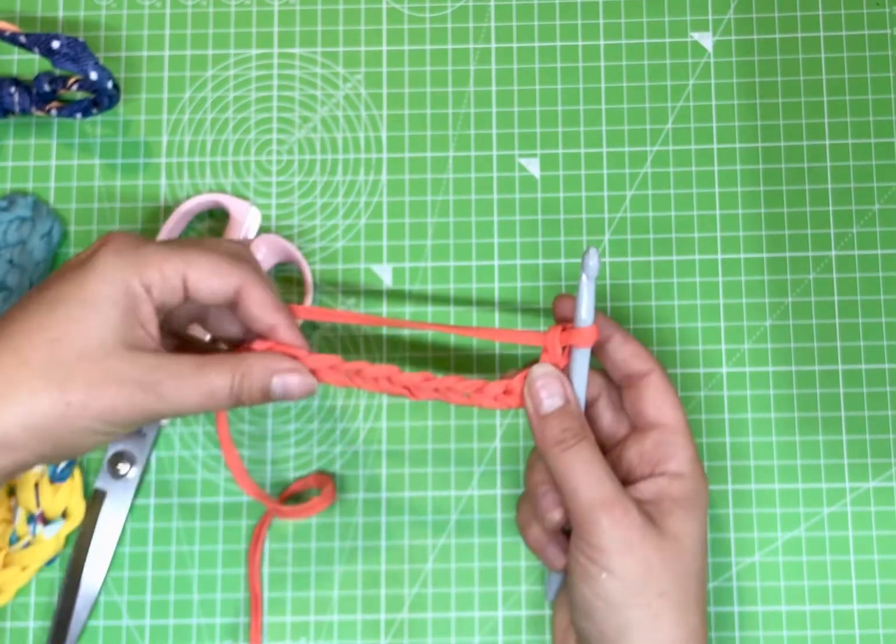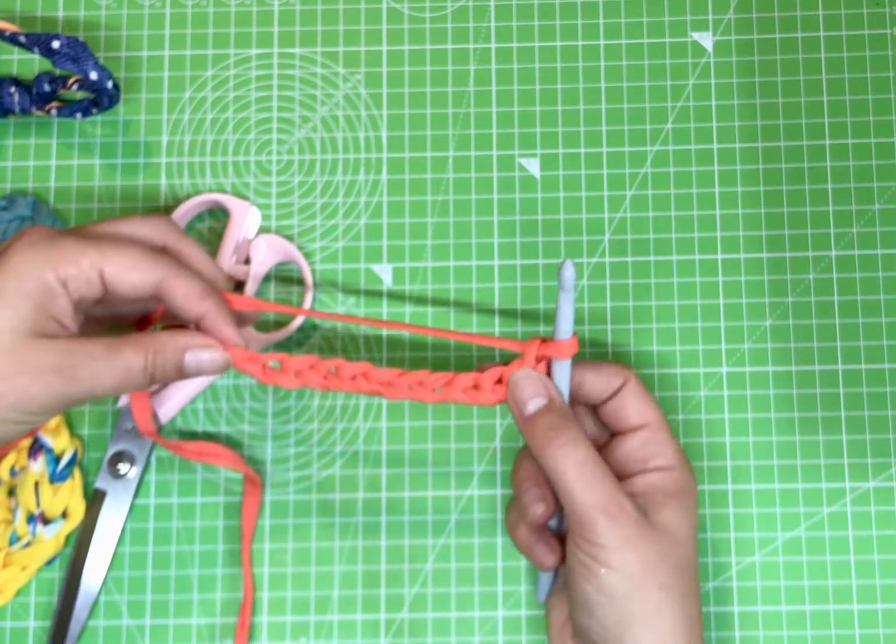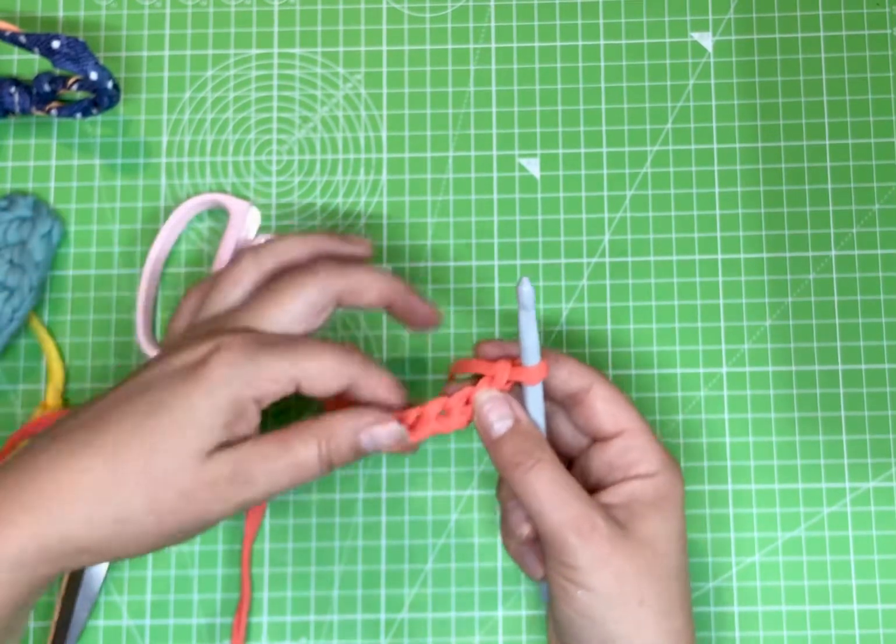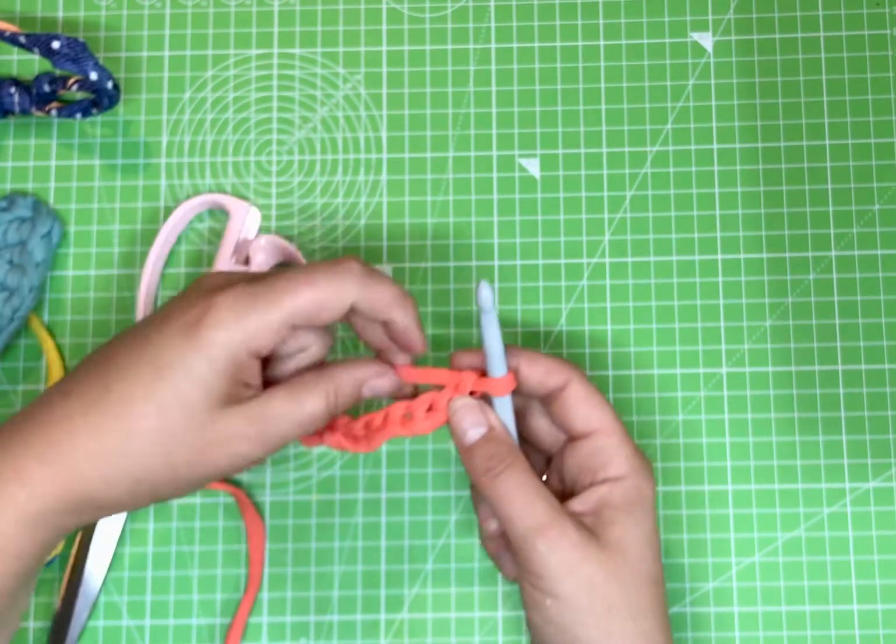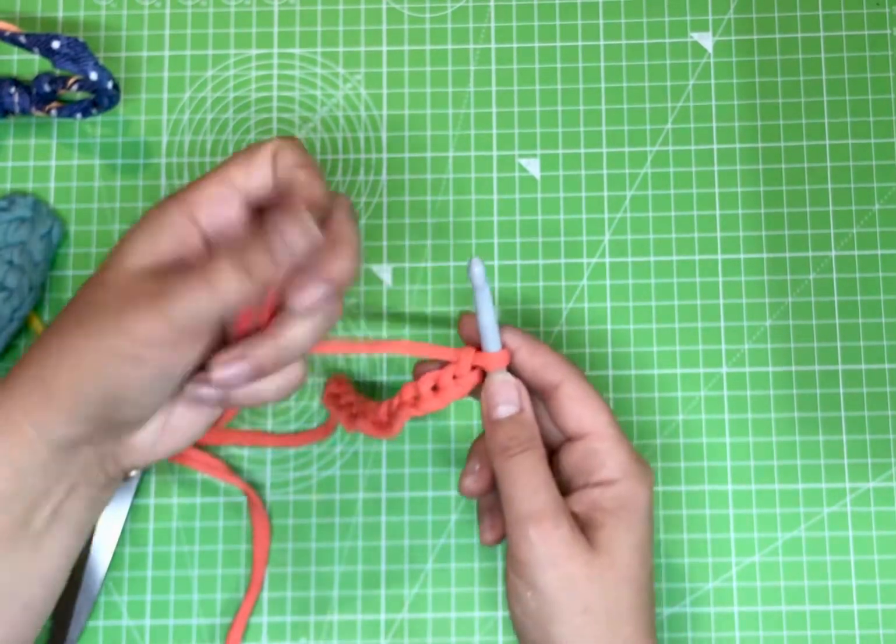Now, obviously, if you are a beginner crocheter, there's a really good lady called Bella Coco. And if you type in chain stitch with her, if you didn't really catch that, she'd give you a great slow demonstration of how to do that.